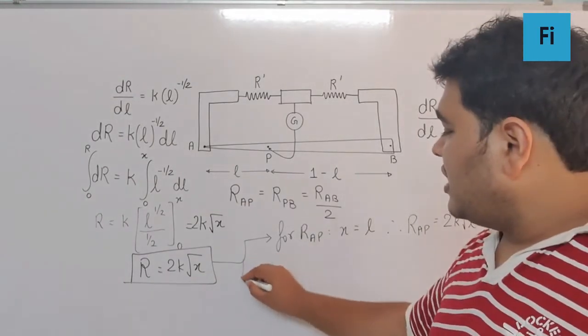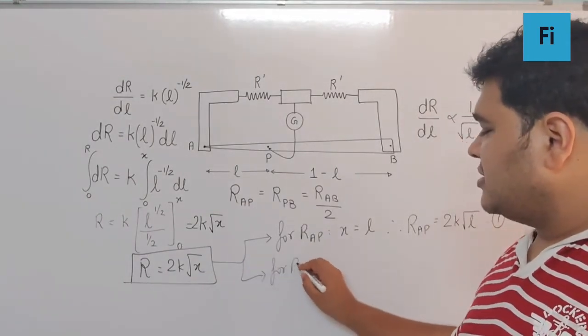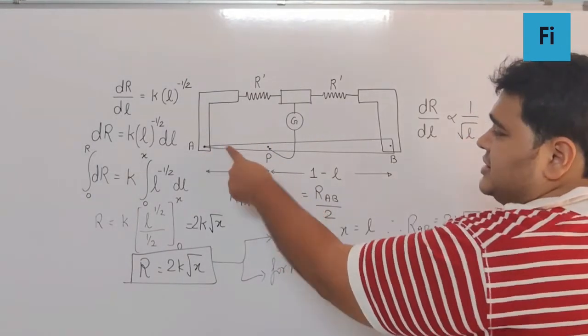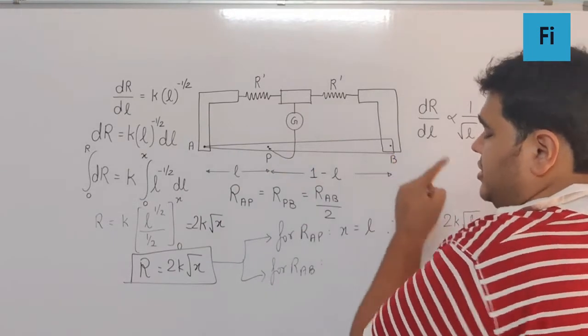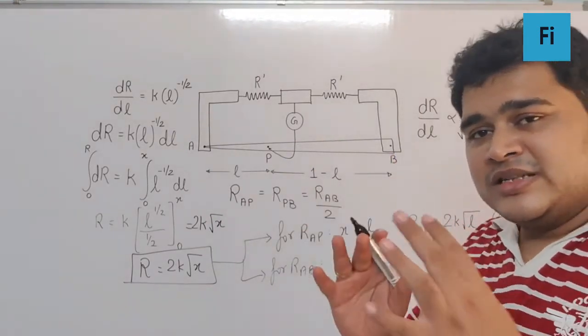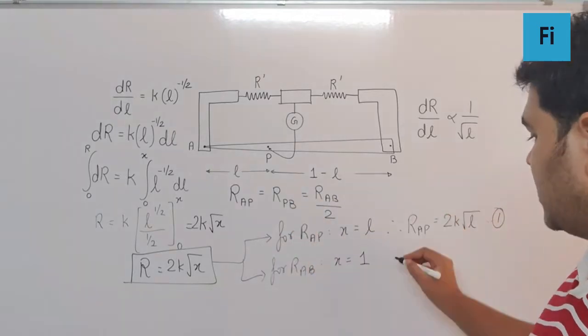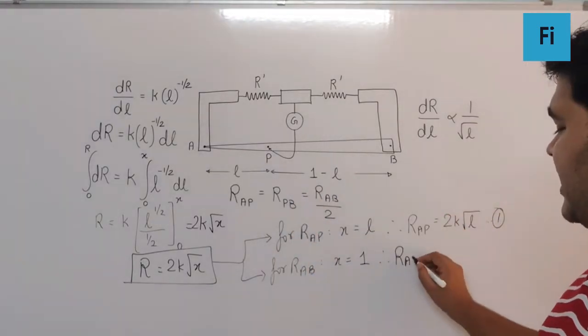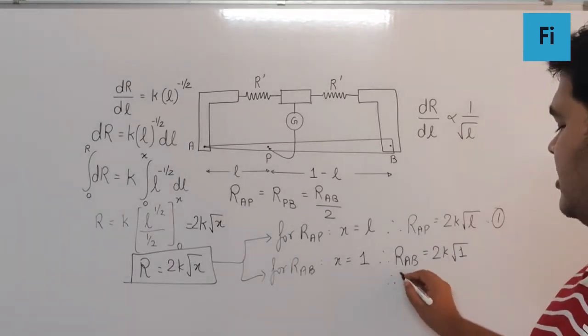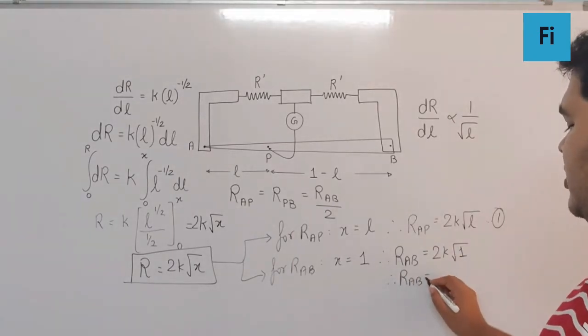Now for R_AB, which is the total resistance of the wire, we can say x equals 1 because that is the total length of the wire. So the value of R_AB is going to be 2k√1, that means R_AB = 2k.